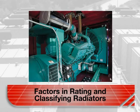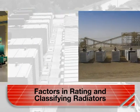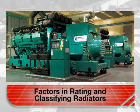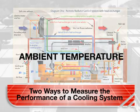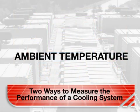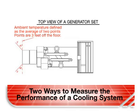Now we dive into the details of rating and classifying radiators. These are the factors involved: where they are installed, the temperatures they are rated to handle, and how those ratings are determined. There are two ways to measure the performance of a cooling system: ambient temperature and what's called the air on core, or AOC. When a cooling system is rated for ambient temperatures, what is measured is the temperature of air on the inlet side of the system, before it picks up heat from the alternator and the engine components.